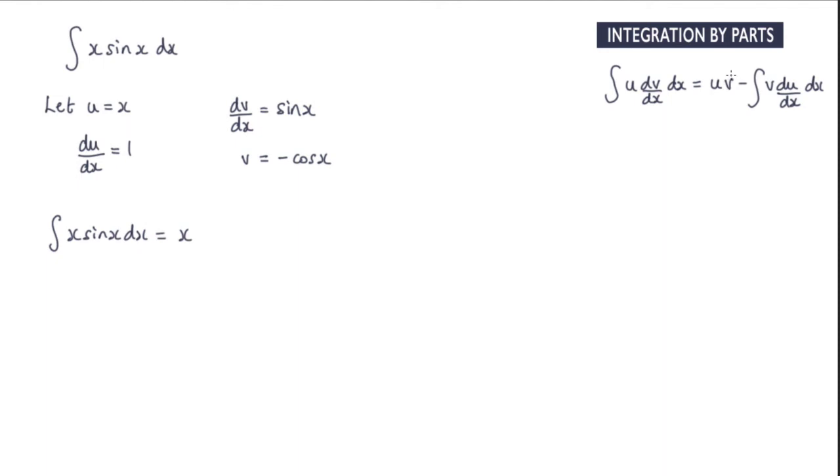That's multiplied by v and v is negative cos x. So we've got a negative cos x minus the integral of v, which is negative cos x. So I'm going to take that negative and make that into a positive.